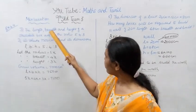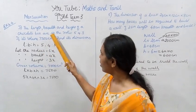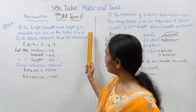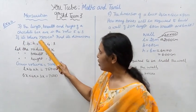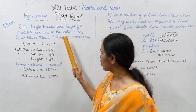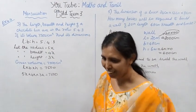The length, breadth and height of a chocolate box are in the ratio 5:4:3. If its volume is 7500 cubic centimeters, find its dimensions.